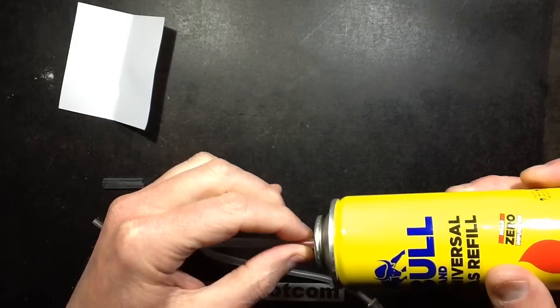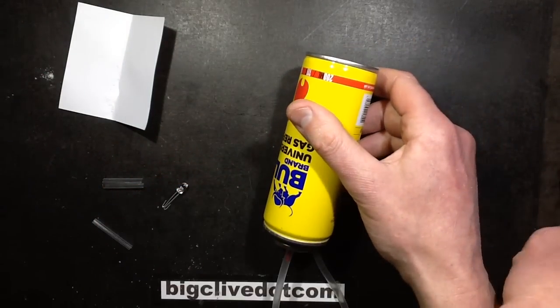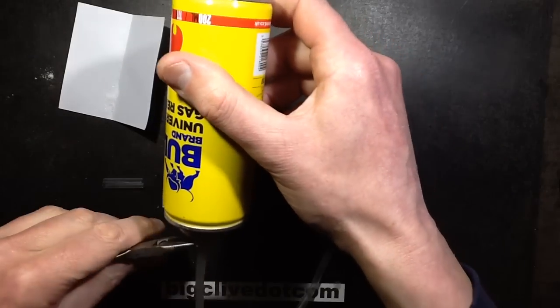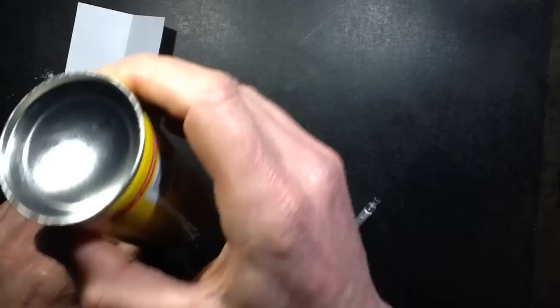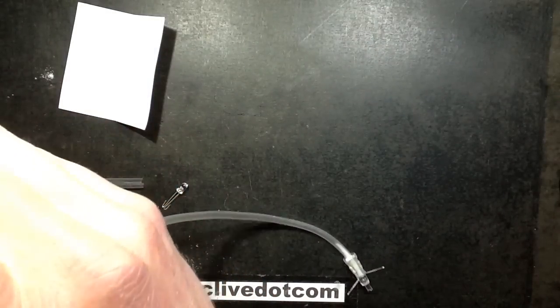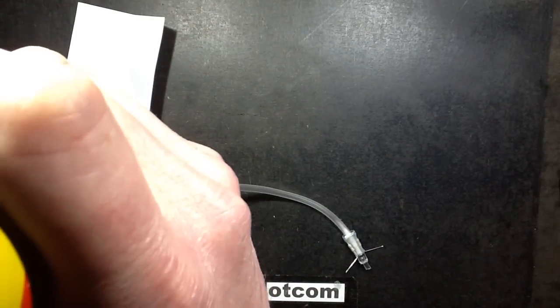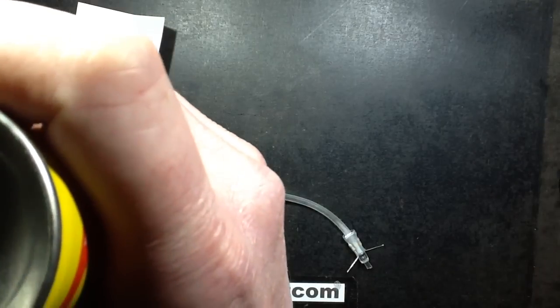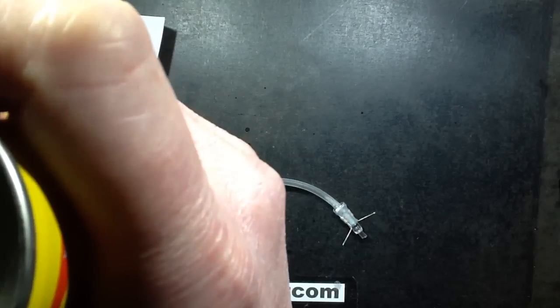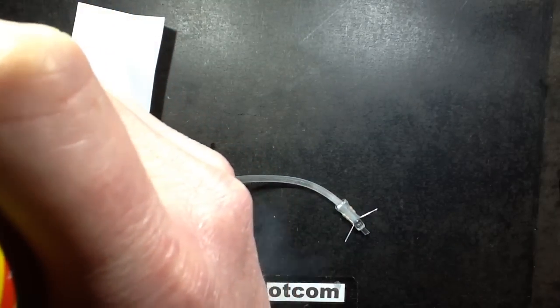So initially a lot of this butane will probably just spray out because it's hot. Well, it's warm, and it needs to chill the tube down to the point it can actually stay in liquid. So some has gone down to the bottom. And it's boiling and spitting out.